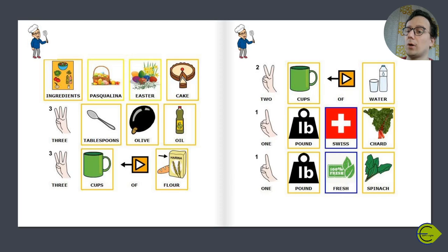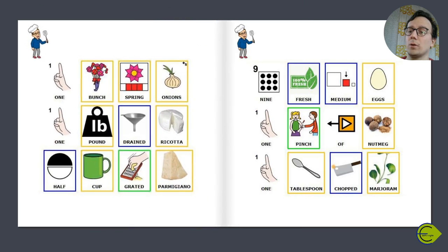3 cups of flour, 2 cups of water, 1 pound Swiss chard, 1 pound fresh spinach, 1 bunch spring onions.